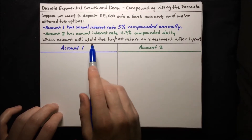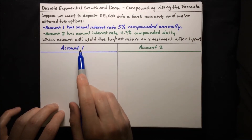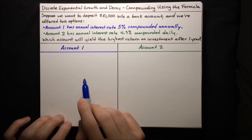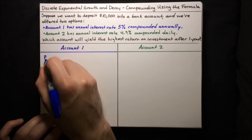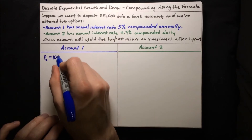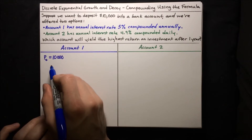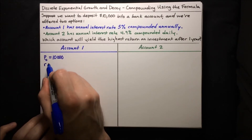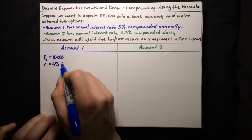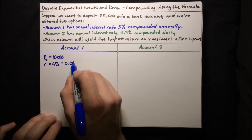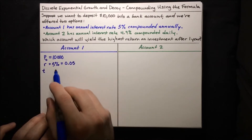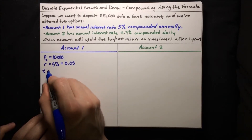We're going to compute how much money is in each account after one year, starting with account 1. Let's collect our information. Our principal, our initial amount in the account P0, is equal to $10,000. Our interest rate R is 5%, so 0.05 in decimal. And then T, the amount of time that we are letting the money sit in the account for, is one year. So T equals one.